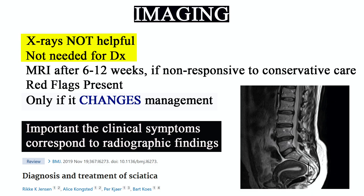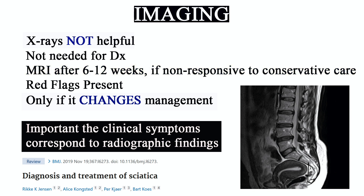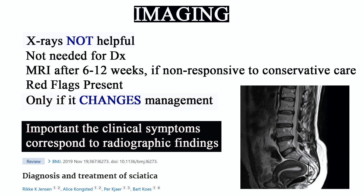What role does imaging play with sciatica? First off, x-rays are not helpful as they only address the bone structures of your spine. Secondly, most guidelines don't recommend MRIs until 6 to 12 weeks of conservative care has been tried and the patient is non-responsive. An important thing to note is that clinical signs and symptoms should always correlate with the radiographic findings. We would argue that imaging is only necessary if it changes the course of management — if an MRI is taken but you're still going to do PT or conservative care, it's probably not necessary until the point of injection or surgery is a viable option.